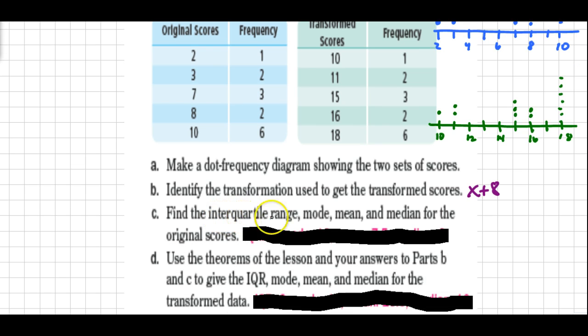Now we're going to find the interquartile range, the mode, the mean, and the median for the original scores. What I'd recommend here is that you make a list of all the data so you can find the median. So our first score was a 2, then we had 2 people who got 3's, 3 people who got 7's, 2 people who got 8's, and 6 people who got 10's.